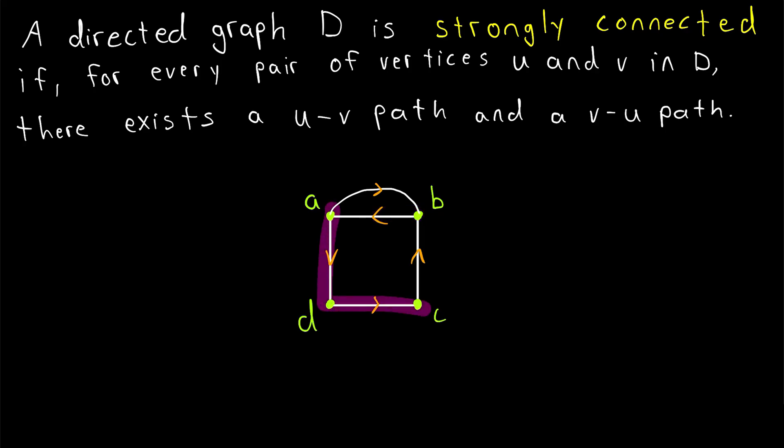We can also travel from A to C, and we can travel from C to A. And if you took the time to check, you would see it's also possible to travel between every other pair of vertices in this graph in either direction. So it is a strongly connected directed graph. It's possible to reach any vertex from any other vertex.